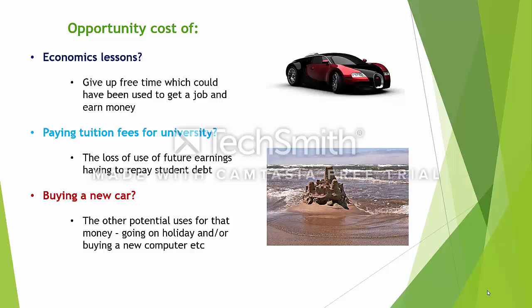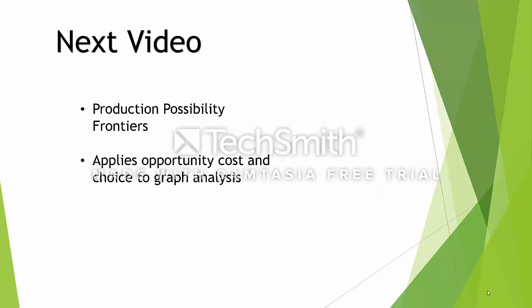For example, you could have gone on holiday with it, or bought a new computer and so forth. So hopefully that clarifies what opportunity cost is and how choice and opportunity cost are important in economics. In the next video we're going to apply the concept of opportunity cost and look at it graphically, examining something called production possibility frontiers, which illustrate choice and opportunity cost. Click on the link now if you want to go straight to that video, otherwise please click the link at the bottom and subscribe. I look forward to seeing you next time.